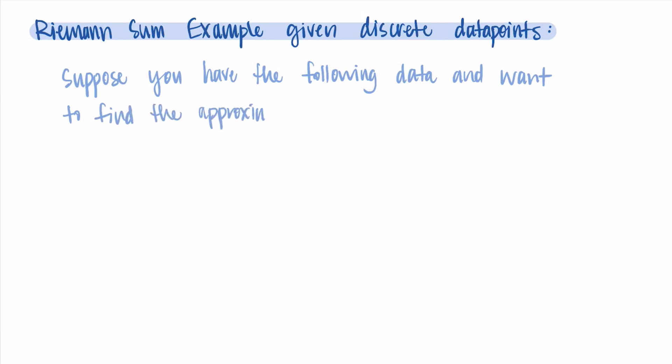So for this example, let's suppose you have the following data and you want to find the approximate area under the curve that it creates. So we use Riemann sums to approximate area and we do this with either a left, right, or midpoint Riemann sum. I'm going to ask us to do the left and the right Riemann sums. And before we start doing that, let's just get the data that we're going to be using. So I'll write it here, but for the x's, we have 2, 5, 8, 11, and 14.